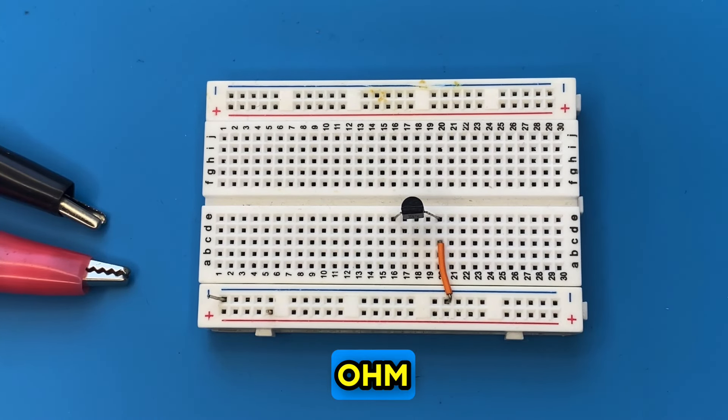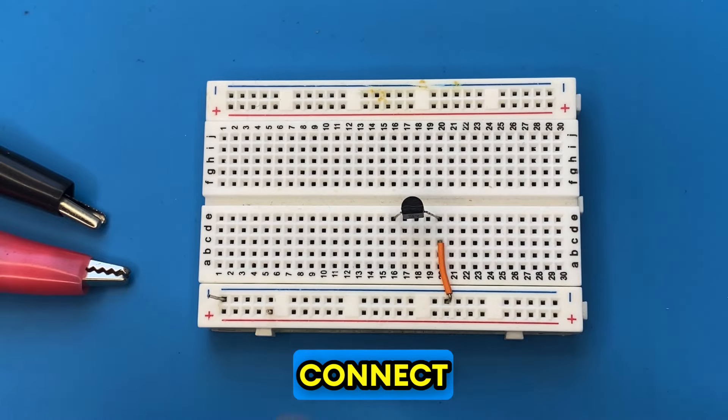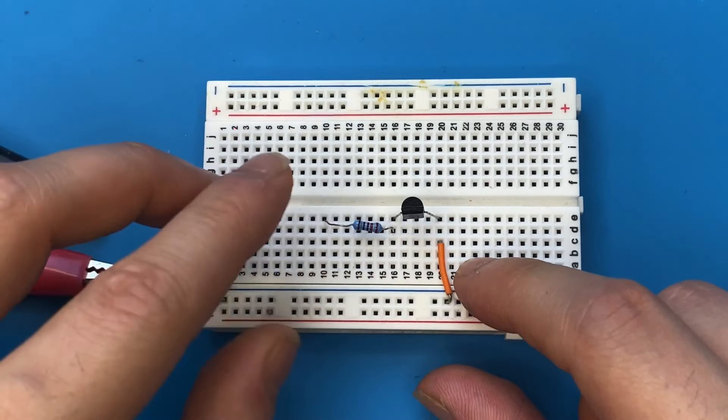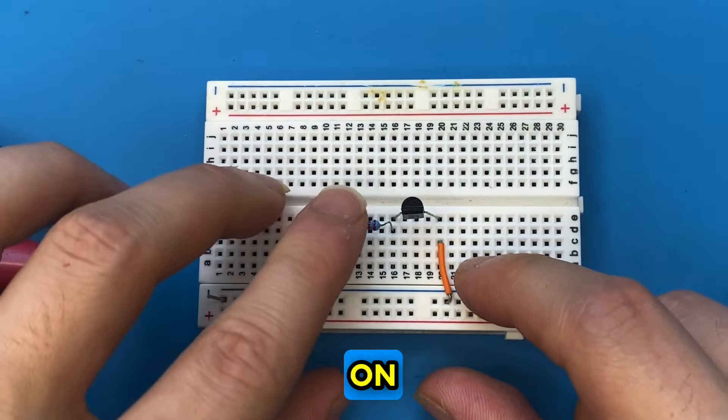Let's grab our 330 ohm resistor and connect it to the collector of the transistor. The other end will be connected to a blank spot on the breadboard.